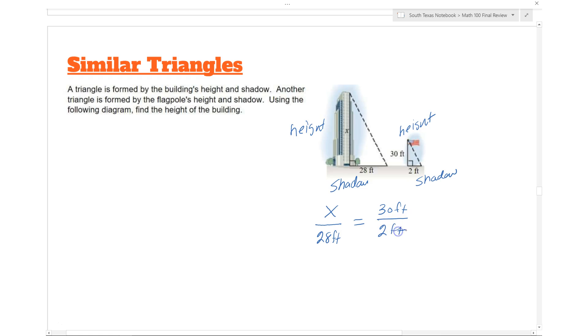So it's two feet, and X is going to represent the height of the building. We notice we have the two ratios that are equal. We're saying that they're proportional - they have the same rate.